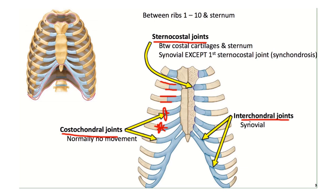The interchondral joint is present between the costochondral cartilages — specifically between the 6th and 7th, the 7th and 8th, and the 8th and 9th costochondral cartilages. There are interchondral ligaments present here as well. It is important to note that the articulation between the costochondral cartilages of the 9th and 10th ribs is fibrous in nature.